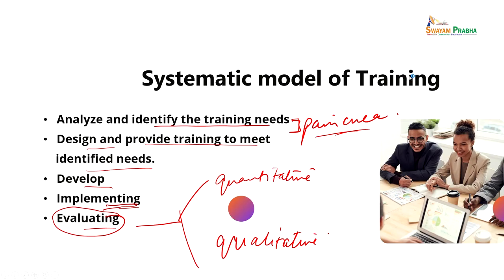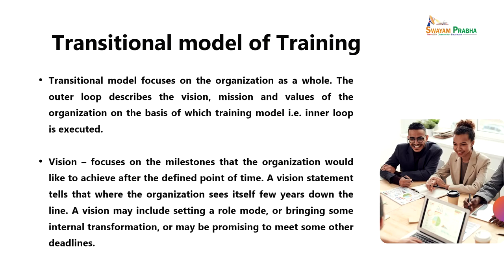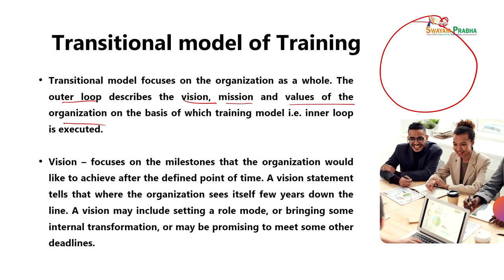Next is the traditional model of training, which focuses on the organization as a whole. There are two loops associated with the transitional model of training: the inner loop and the outer loop. The outer loop describes the vision, mission, and values of the organization on the basis of which the training model is executed. Vision is something articulated for the future — it focuses on the milestone the organization aims to achieve after a defined point of time.